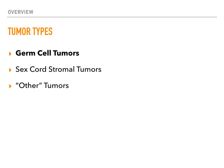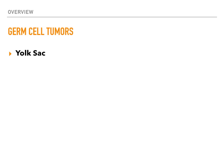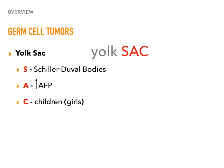The first germ cell tumor we're going to talk about is the yolk sac tumor. When you think about a yolk sac tumor, I want you to remember the mnemonic SAC — S-A-C. That clues us in on the fact that the yolk sac tumor has Schiller-Duvall bodies, increased levels of AFP, and is found in children.